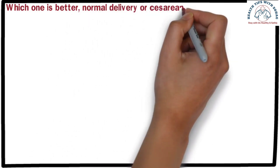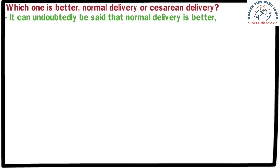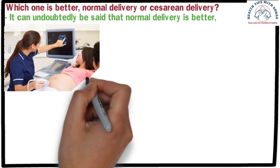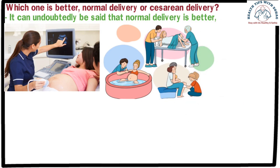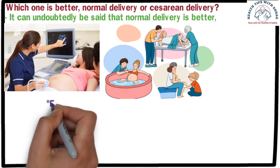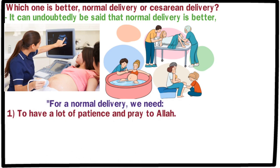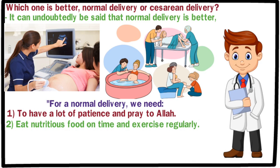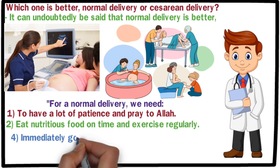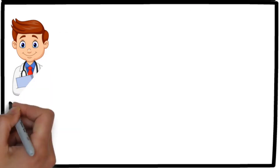If the question arises about which is better — normal delivery or caesarean delivery — it can undoubtedly be said that normal delivery is better, unless there are health risks for both baby and mother during pregnancy. Normal delivery is the natural process. Many women fear the pain, but it is possible to have a painless normal delivery through various medications and methods available today. For a normal delivery, you need: number one, a lot of patience and prayer; number two, eating nutritious food and exercising regularly; number three, seeking advice from a qualified doctor from the beginning of pregnancy; and number four, going to hospital immediately when labor pain starts.